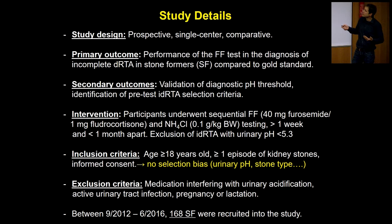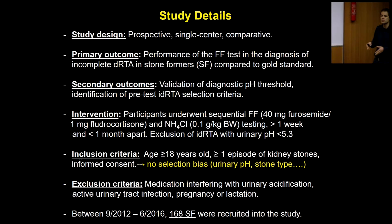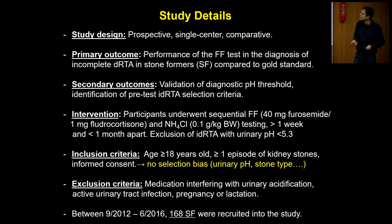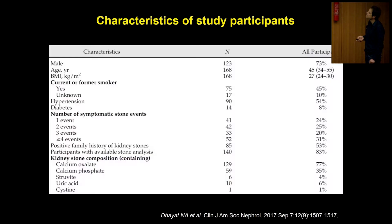We compared the furosemide-fludrocortisone test with the ammonium chloride gold standard test, done one month apart. We included all patients referred who had at least one kidney stone episode, independent of stone type and other comorbidities such as low bone mass. We excluded patients on medications interfering with urinary acidification, those with active infection, or who were pregnant. We included 170 stone formers in this study.